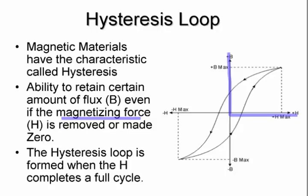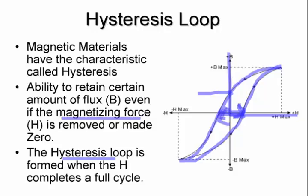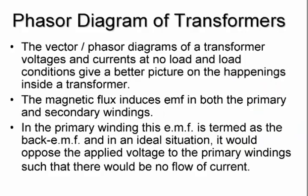Looking at the full BH curve, we see hysteresis: even with H going to zero, there's still some flux density remaining — that remaining amount is the hysteresis. Because you have to remove it every cycle, that also determines the losses in your transformer. This hysteresis loop is formed when H completes a full cycle from positive to negative, and it changes depending on the material used.